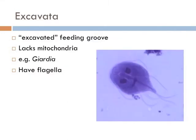Another major kingdom of eukaryotes is the excavata. The one thing they share in common is an excavated feeding groove, as you can see in the picture. Many excavates lack classical mitochondria — these organisms are often referred to as amitochondriate, although most, perhaps all, retain mitochondria organelles in a greatly modified form. Most excavates have two, four, or more flagella, and many have a conspicuous ventral feeding groove with a characteristic ultrastructure supported by microtubules, known as the excavated feeding groove.